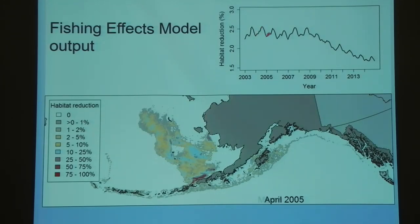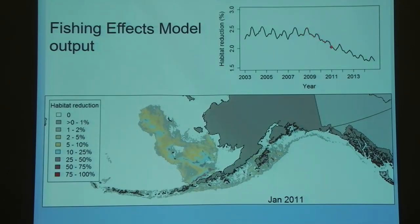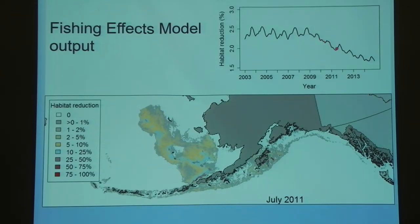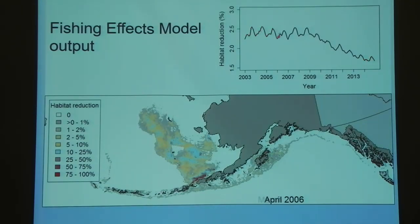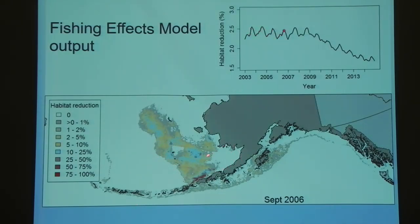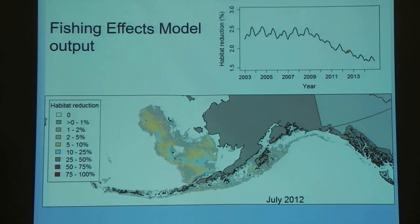Here is the output from the model. It's both spatially explicit, as you can see, and produces a nice time series of what we call habitat reduction — the aggregation of habitat disturbance within all of those grid cells. This is run using all gear types and all habitat features, considering the impact of all of them in aggregate. The red area is kind of the hot spot of trawling — they call it Cod Alley, where the most disturbance is happening. You can also see the effects of some marine protected areas where trawling is not allowed.